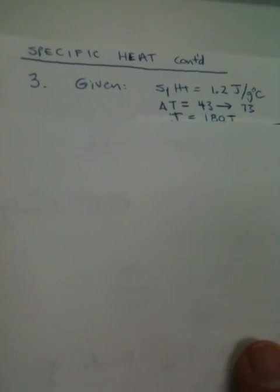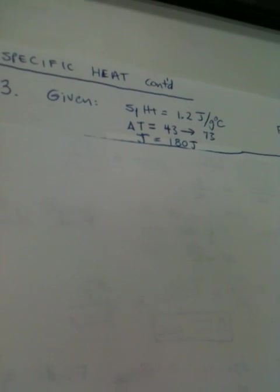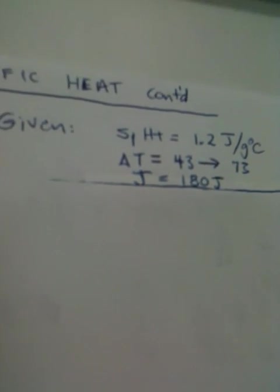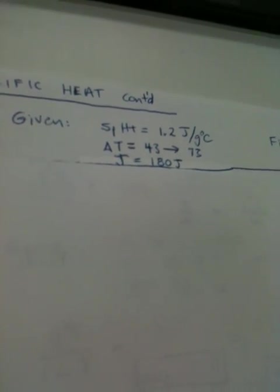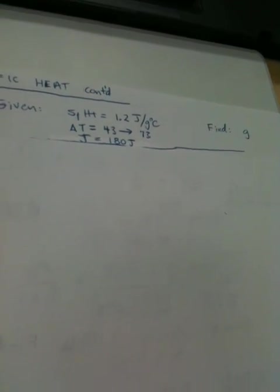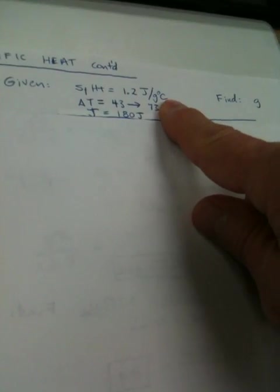Now, this time we're looking for grams. David, what are we going to put on top? I've got 1.2 joules or grams degree centigrade? Who's on top? Why would you put joules on top? Look at what you're asked to find. You're going to have to put grams on top and joules on the bottom. Because joules will cancel out and don't leave grams degrees centigrade behind.